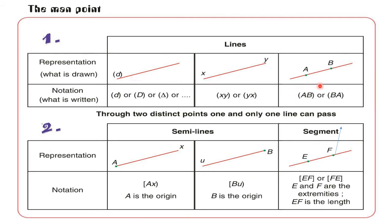What is the name of the first line? We name it as small d, capital D, delta, etc. I name it as one letter and put it between two parentheses. So the notation is, for example, (d). If you want to measure this line, can you measure it? No, I can't measure it. It has no measurement.